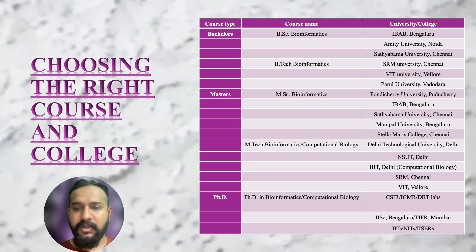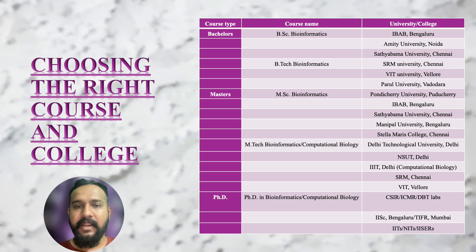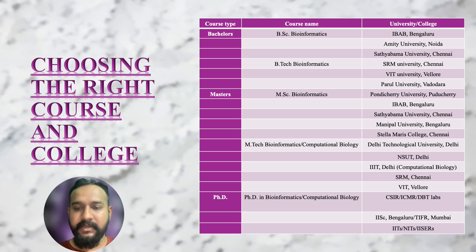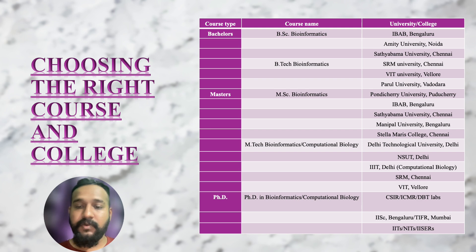Choosing the right college and course is important. I have listed some colleges providing good degree and knowledge-based education in bioinformatics and computational biology — you can see the list in this slide. The degrees include BSc Bioinformatics and BTech Bioinformatics, as discussed previously. For PhD, you should target government labs like CSIRs, ICMRs, and IISCs.